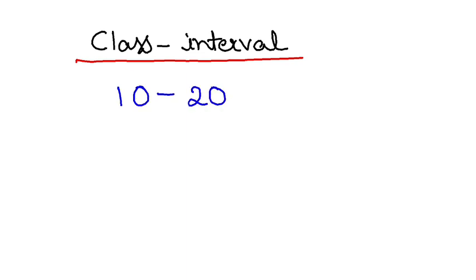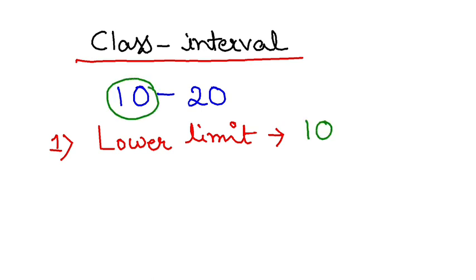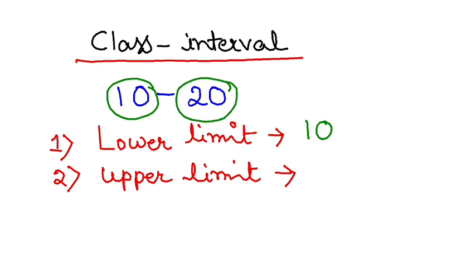Now one by one you have to learn some terms here. Number one, the first one is called the lower limit. Lower limit is nothing but the lower value, that is 10. Second is called the upper limit. Upper limit is the higher value, that will be 20.